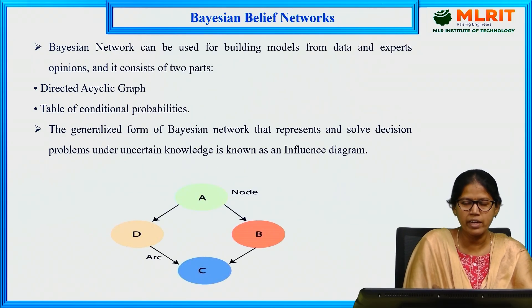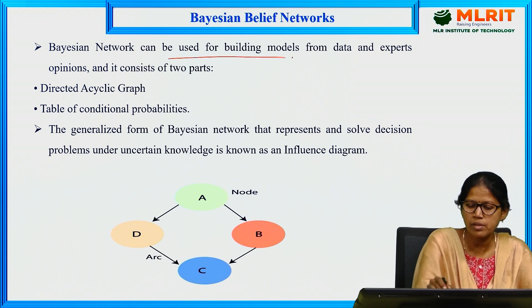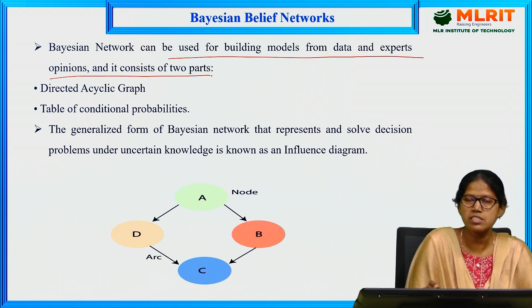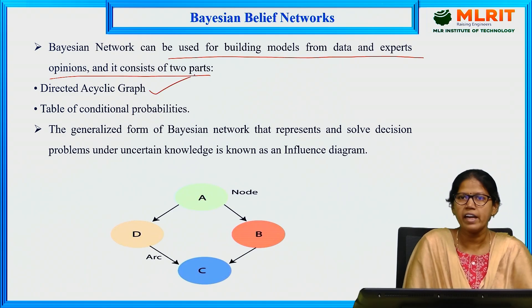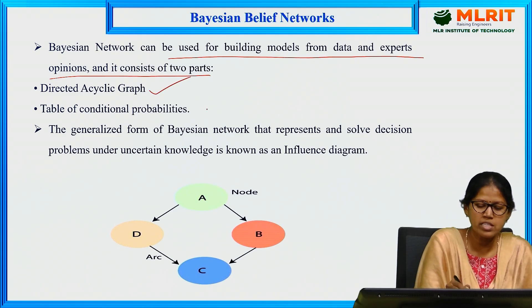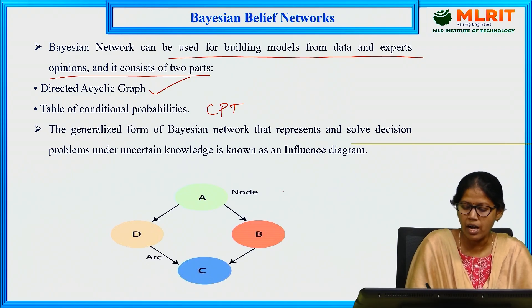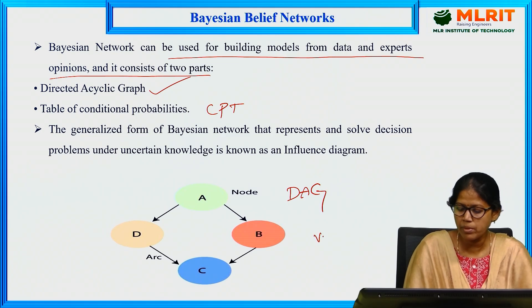The Bayesian network can be used for building models from data and expert opinions. It consists of two parts: one is DAG, the directed acyclic graph, and the other is CPT, the conditional probability table. In the graph, A, B, C, D are called variables.